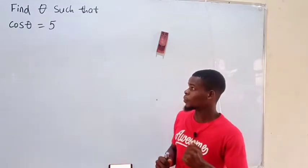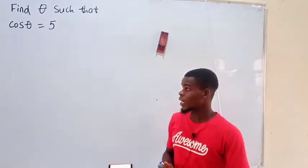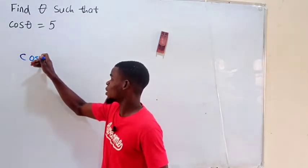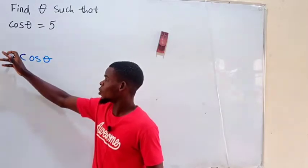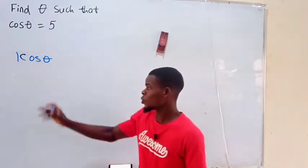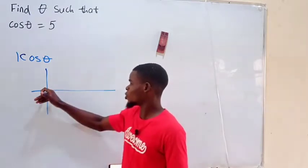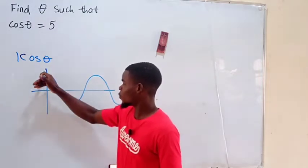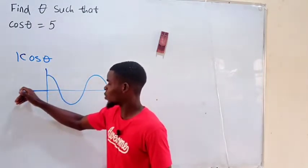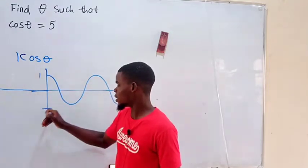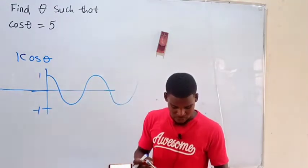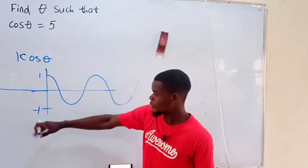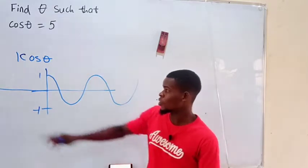From our knowledge of cosine of angles, we know that the cosine of an angle — provided that the amplitude is 1, cosine of theta — if you plot the graph of this, it will give us some wavy structure, starting from 0. This is 1 and this is negative 1. That is, the highest value this can give you is 1 towards the positive axis, and negative 1 towards the negative axis, depending on the coefficients.